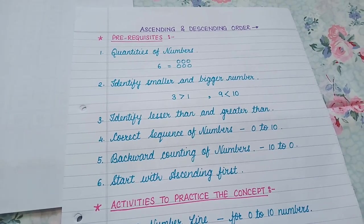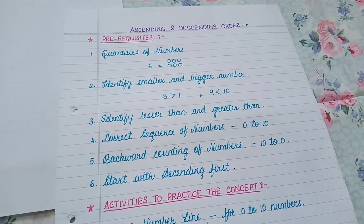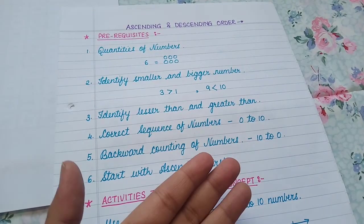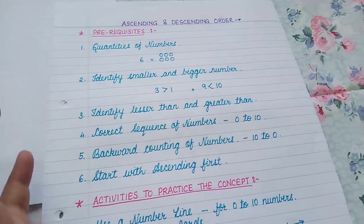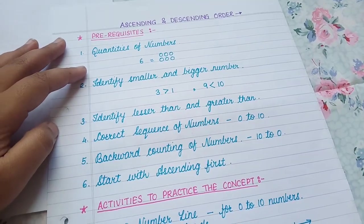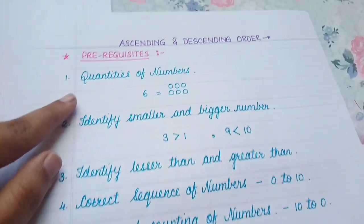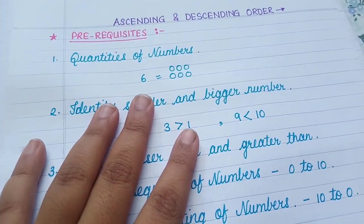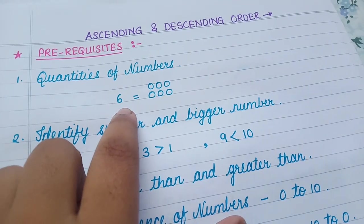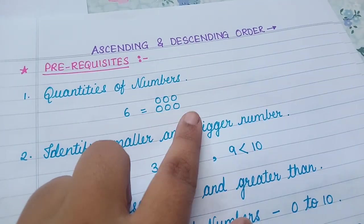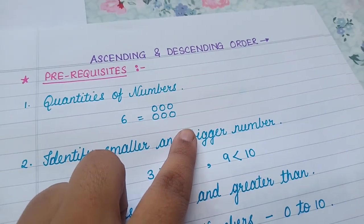As for any maths skill, there are prerequisites required for the child to know before teaching that skill. So what are those prerequisites for ascending and descending order? The child first must know quantities of numbers. So the child should understand that the number 6 represents a quantity of 6 objects or 6 units.